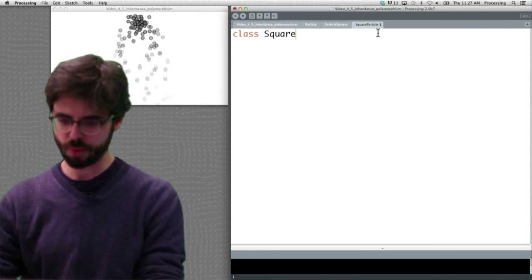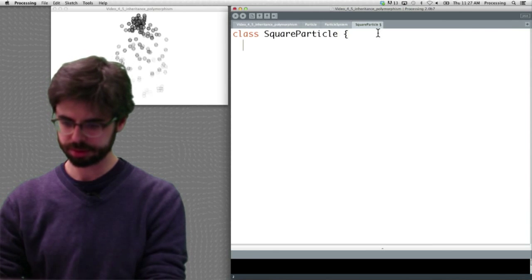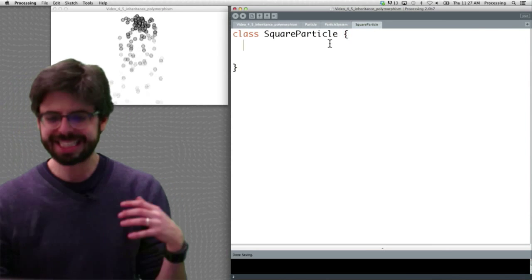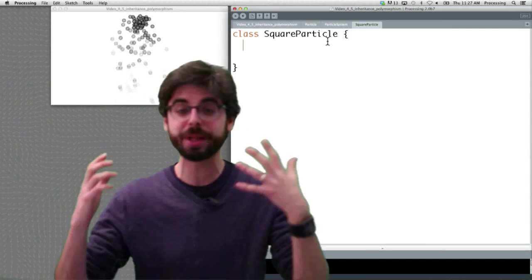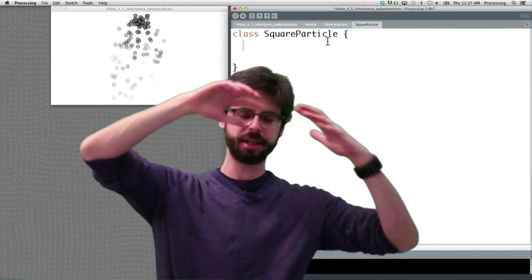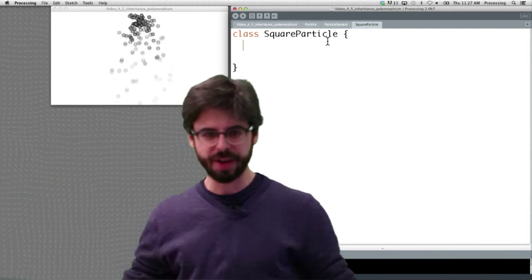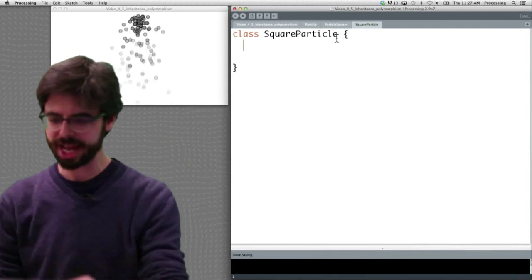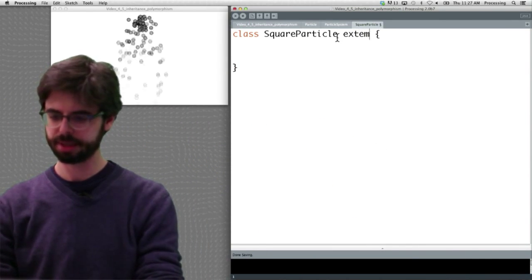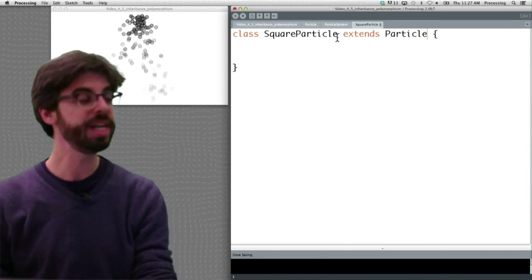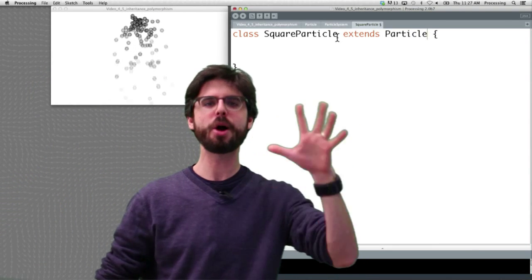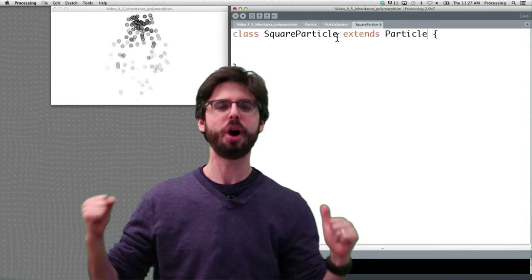And I'm going to say class square particle. And now instead of typing all of the stuff that we would normally have to add - we need an update method, a display method, we need all these vectors, we need all this stuff - we're just going to say, hey, we extend particle. We just inherit everything that a particle has to offer, a square particle also has to offer.